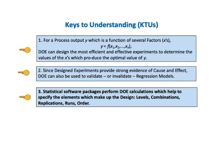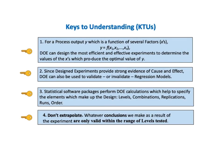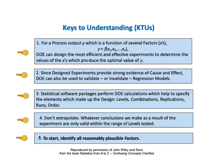Key number 3 says: statistical software packages perform DOE calculations, which help to specify the elements which make up the design. These elements are levels, combinations, replications, runs, and order. Key number 4 says: DON'T EXTRAPOLATE. Whatever conclusions we make as a result of the experiment are only valid within the range of levels tested. Key number 5 says: TO START, IDENTIFY ALL REASONABLY PLAUSIBLE FACTORS.